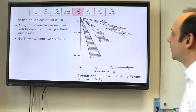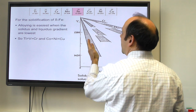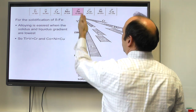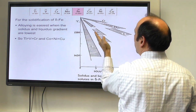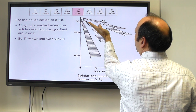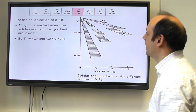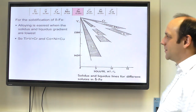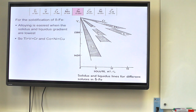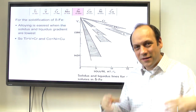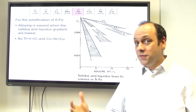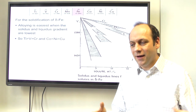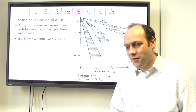As you go closer — titanium, vanadium, chromium — and as you go away — copper, nickel, cobalt — the exception is manganese, because both iron and manganese are magnetic. So as an empirical rule, the Hume-Rothery approach is somewhat useful — not perfect, but helpful for understanding why phase diagrams look the way they do.